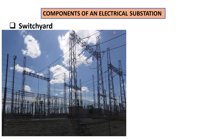Now when you look at a switch yard, you're going to typically see an incoming transmission line. This incoming transmission line could be at voltage levels such as 400 kilovolt, 132 kilovolt, or 66 kilovolt.